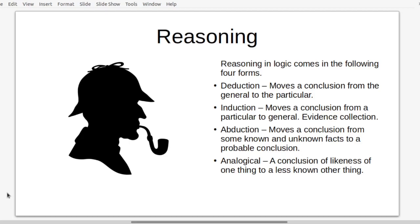In logic we use a lot of reasoning. Most people are familiar with Sherlock Holmes and the so-called deductive method. But there are four different types of reasoning used in logic. Deduction moves a conclusion from the general to the particular — it takes a set of premises and goes in order, like 1 plus 1 equals 2. Inductive reasoning moves a conclusion from a particular to a general. It's evidence collection, more based around the scientific method — noticing a particular thing like an apple falling and moving to a more general conclusion like the law of gravity.